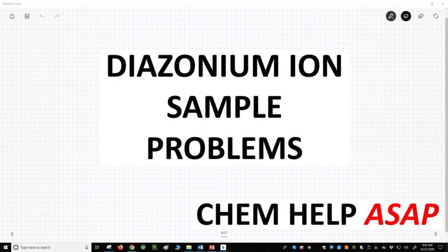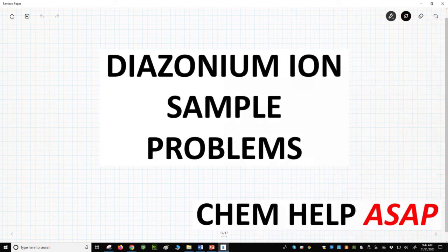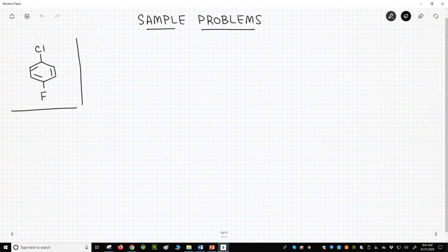Good day to you from Chem Help ASAP. Let's use some of the diazonium chemistry that has been covered in earlier videos in this playlist. On the left is a molecule that we need to make. It's a benzene ring with a chloro and fluoro group para to one another.